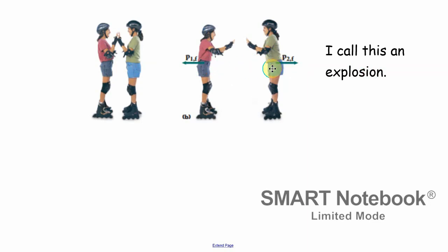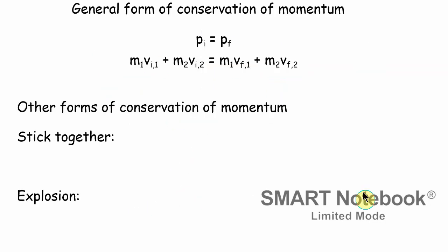This is what I call an explosion type of interaction where both things are together at the beginning and then they're apart at the very end. The basic way to write conservation of momentum is PI is equal to PF, but I think we can all agree that's not super helpful to us.